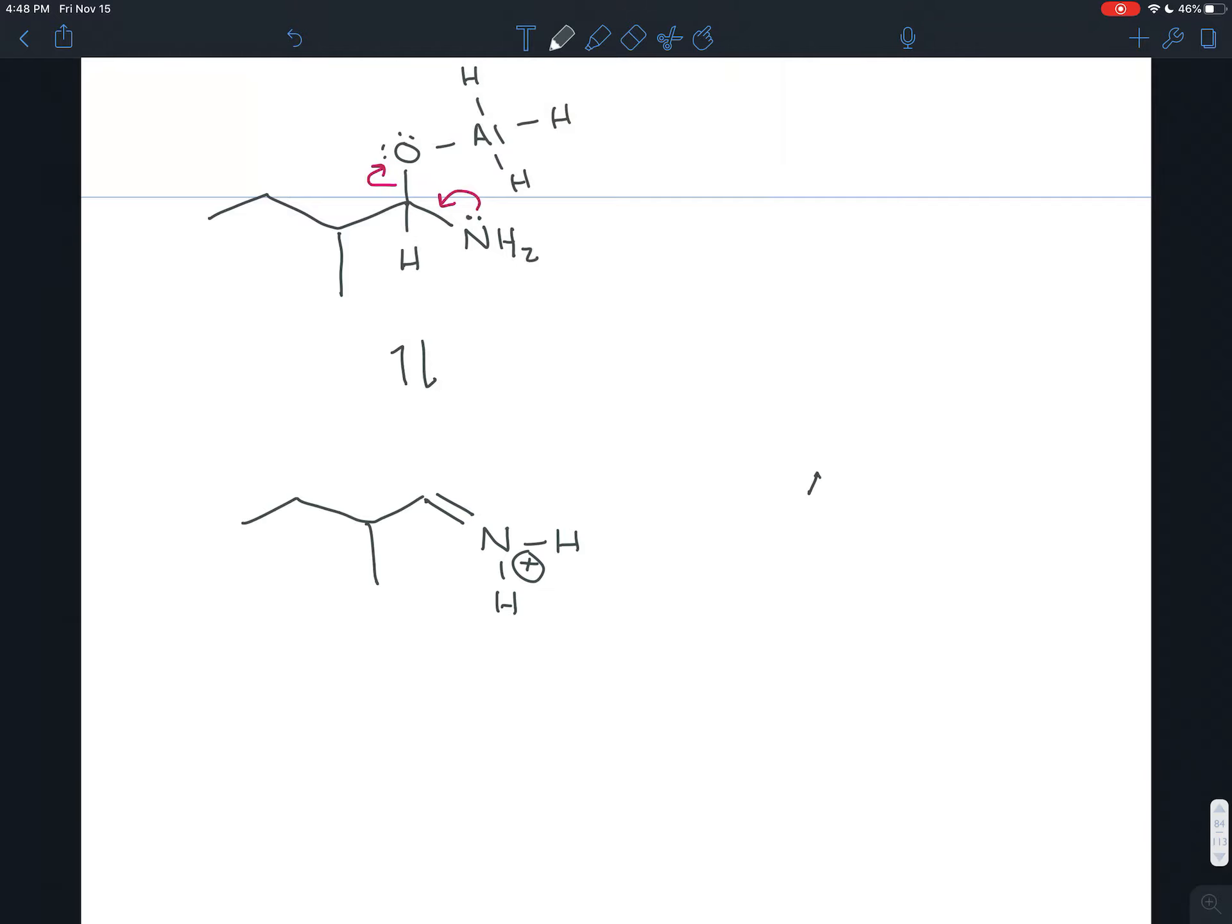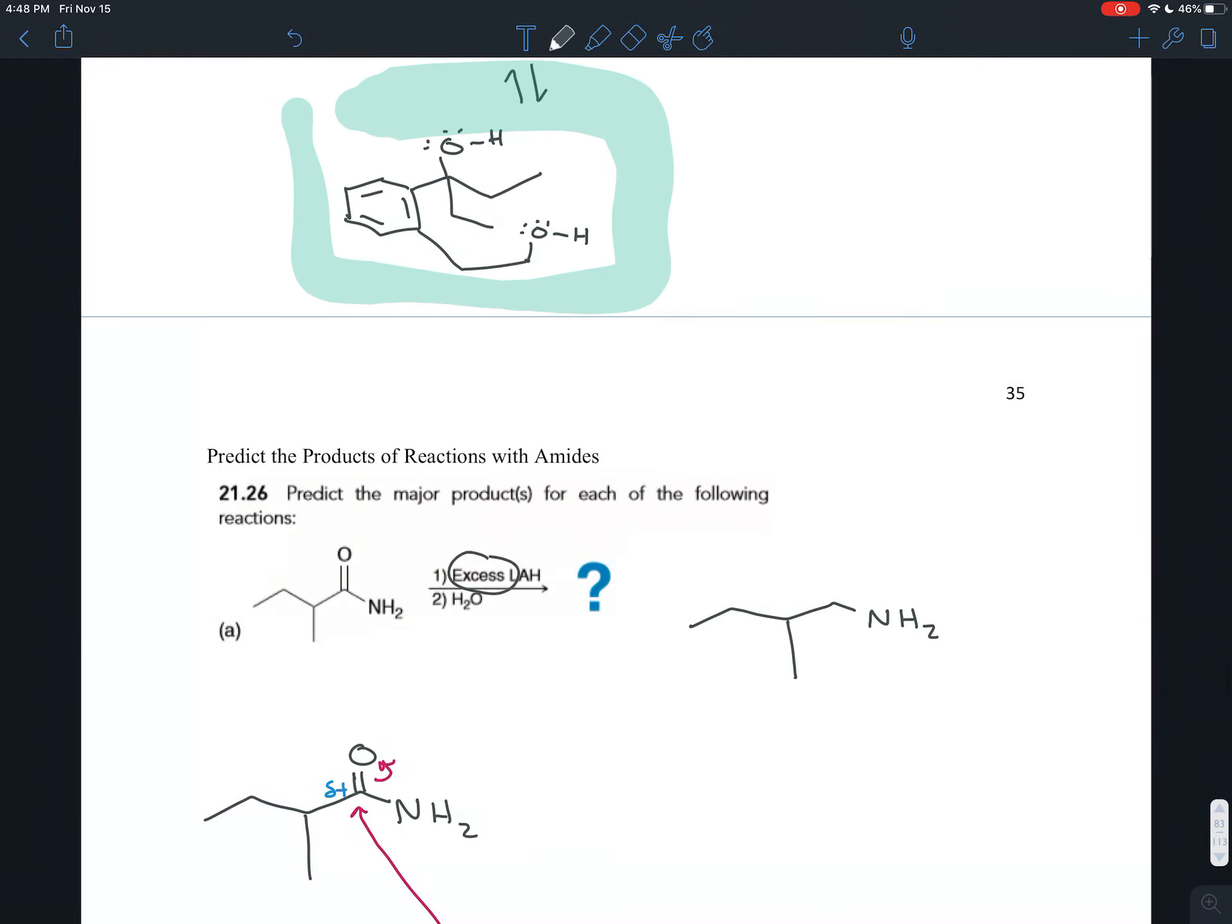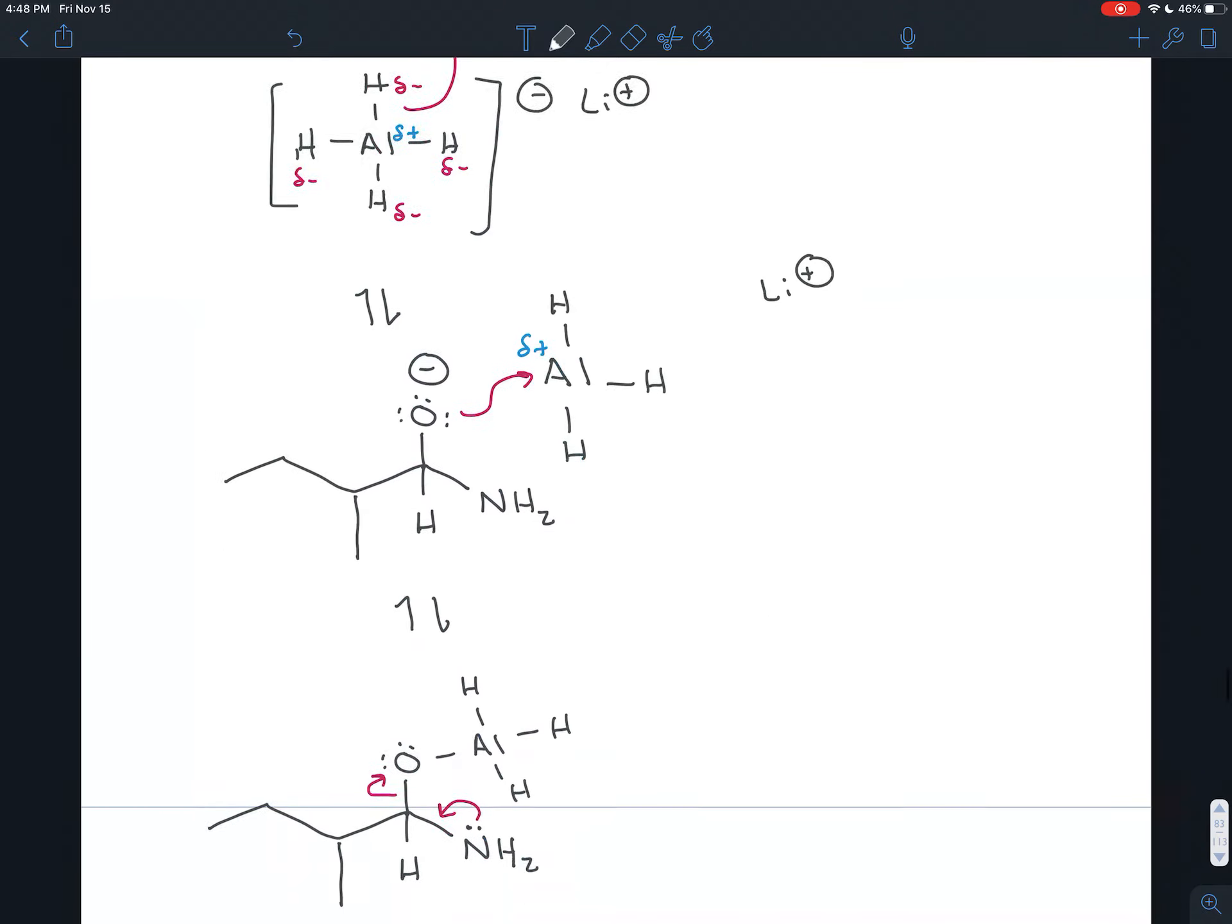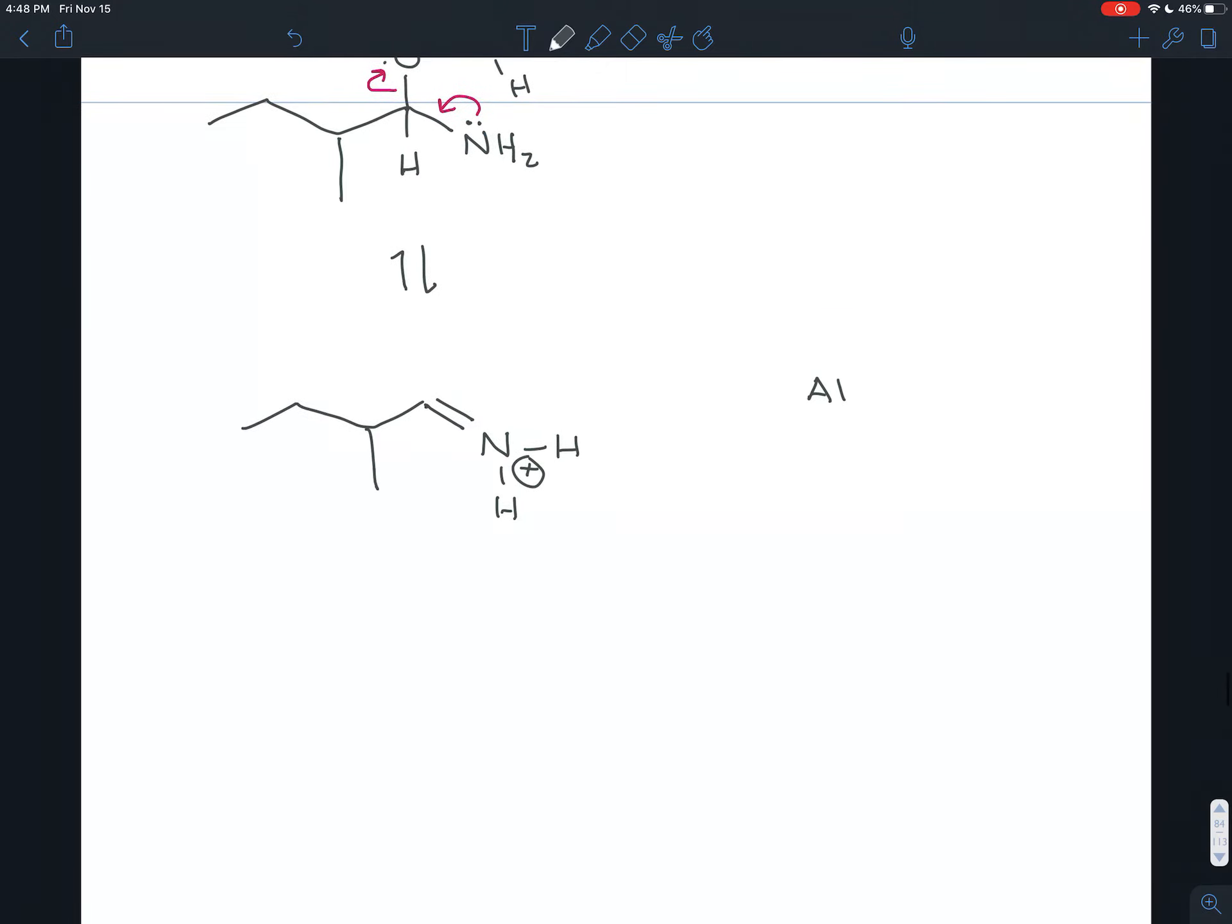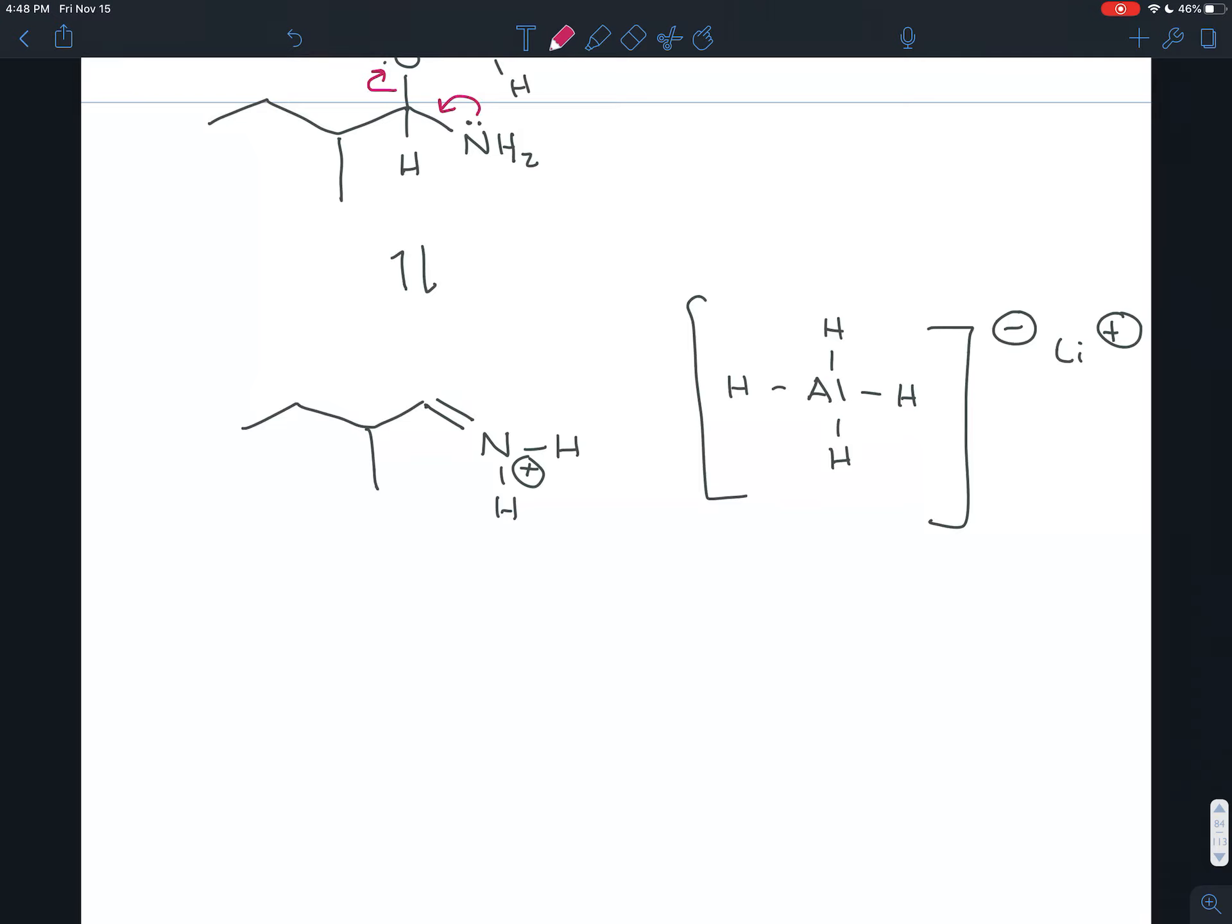And so this molecule can react with a second equivalent of lithium aluminum hydride. Notice in the recipe that there's excess. So a second equivalent of lithium aluminum hydride can come in. And this hydrogen, again, can function, well, I should say the hydride, the hydrogen with the two electrons, can function as a nucleophile and attack this imine, this sort of nitrogen version of a ketone or a carbonyl, so this imine.